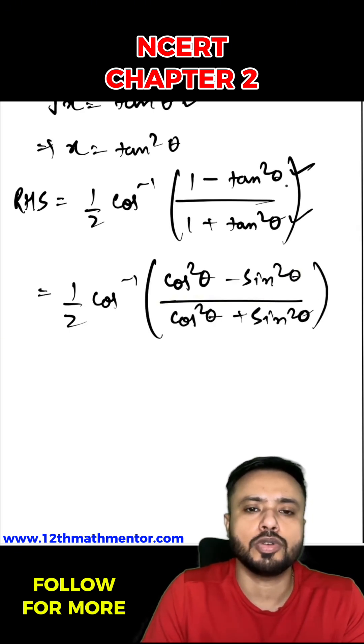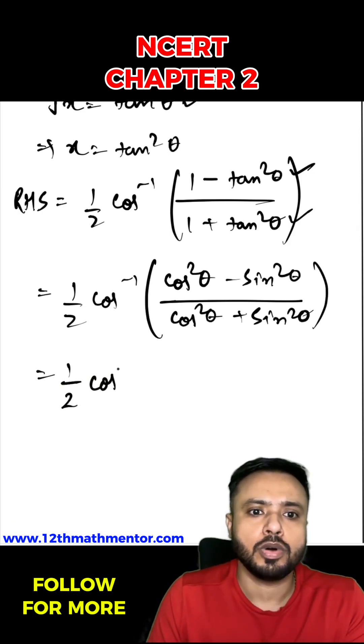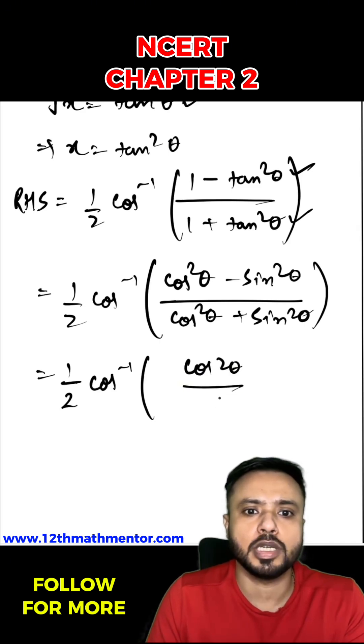I have converted tan square theta into sin square theta upon cos square theta and then taken the LCM. So I got this. It will be 1 by 2 cos inverse, where cos square theta minus sin square theta is cos 2 theta and cos square theta plus sin square theta is 1, so it will be upon 1.